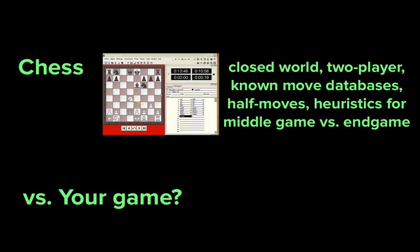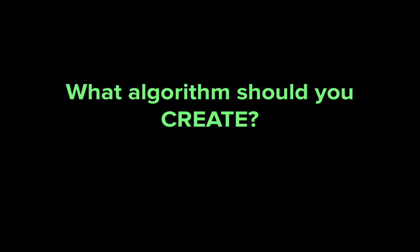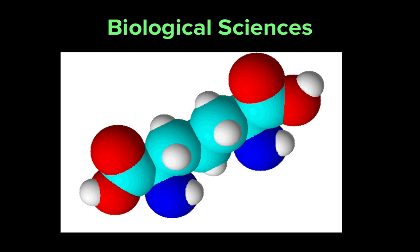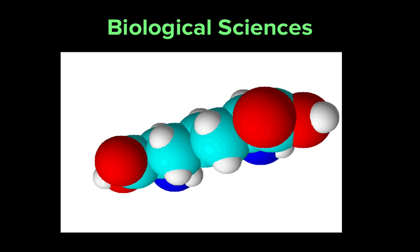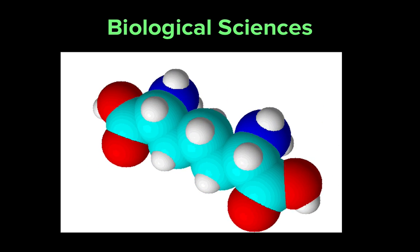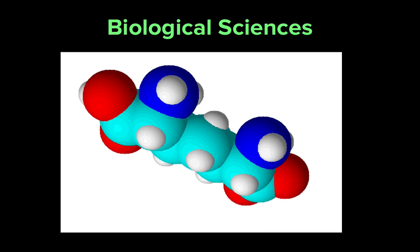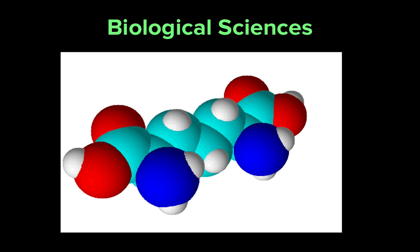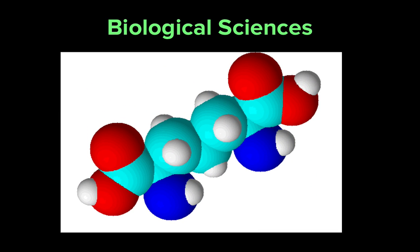If not, then knowing the limitations of those algorithms might lead you to redesign your game, if it does require having a skilled computer player. It's also important to know how to design new algorithms, as well as how to analyze their correctness and efficiency. In the biological sciences, new algorithms are continually being designed for purposes such as designing the molecular structures that are the core of disease-fighting drugs.